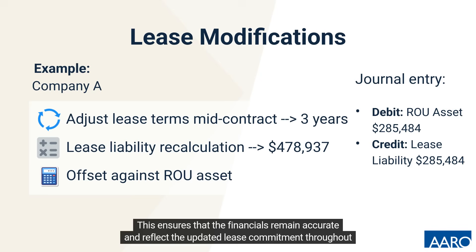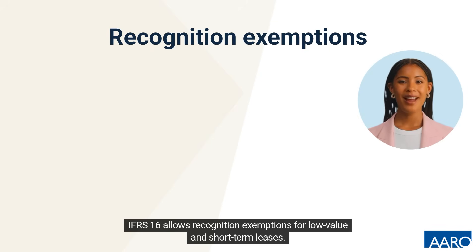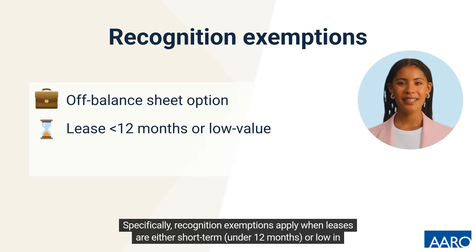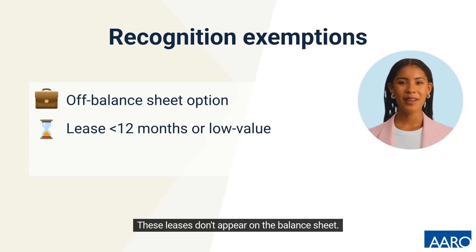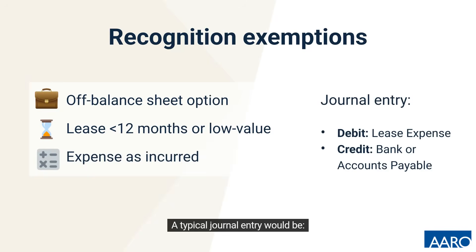This ensures that the financials remain accurate and reflect the updated lease commitment throughout the lease term. IFRS 16 also allows recognition exemptions for low-value and short-term leases. Specifically, exemptions apply when leases are either short-term (under 12 months) or low in value. These leases don't appear on the balance sheet; instead, the cost is expensed as incurred over the lease term. A typical journal entry would be: Debit lease expense and Credit bank or accounts payable.